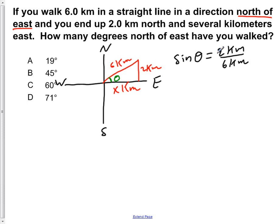So if we use sine of theta equals two kilometers over six kilometers, we now have to solve for theta. We take the sine inverse of both sides, so we get theta equals the sine inverse of two kilometers over six kilometers. So theta equals the sine inverse of one-third.